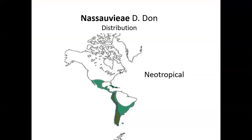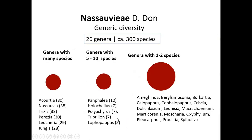The members of Nassauvieae have a tropical distribution with a major concentration in the Andes and in Patagonia. The tribe comprises 26 genera and around 300 species, and it is mostly constituted by monotypic genera, although there are also genera with many species, such as Acurtia with 80, Nassauvia with 38, or Trixis with also 38.